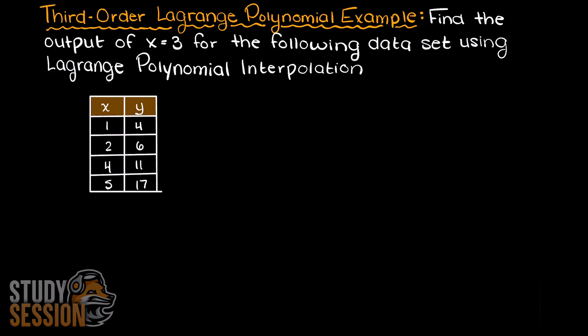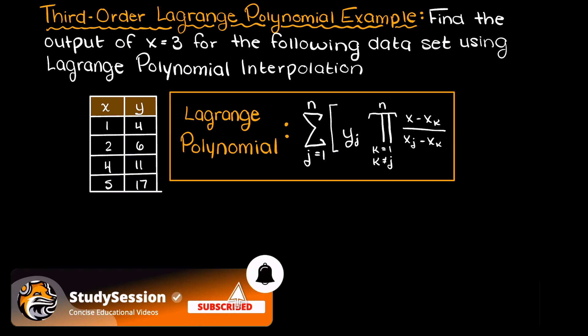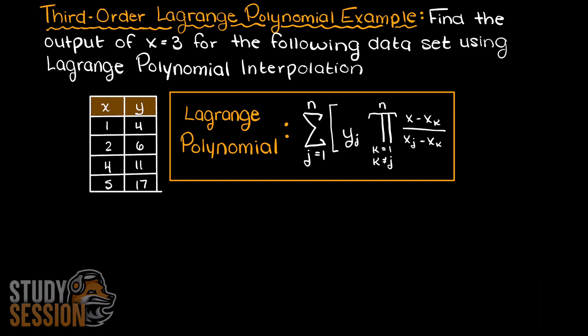I am going to take a second now and write out the general formula for any order Lagrange polynomial here. Since we have four data points presented here we are going to have four terms in our Lagrange polynomial, and we are going to have four minus one degree of the Lagrange polynomial, and therefore a third-degree Lagrange polynomial.